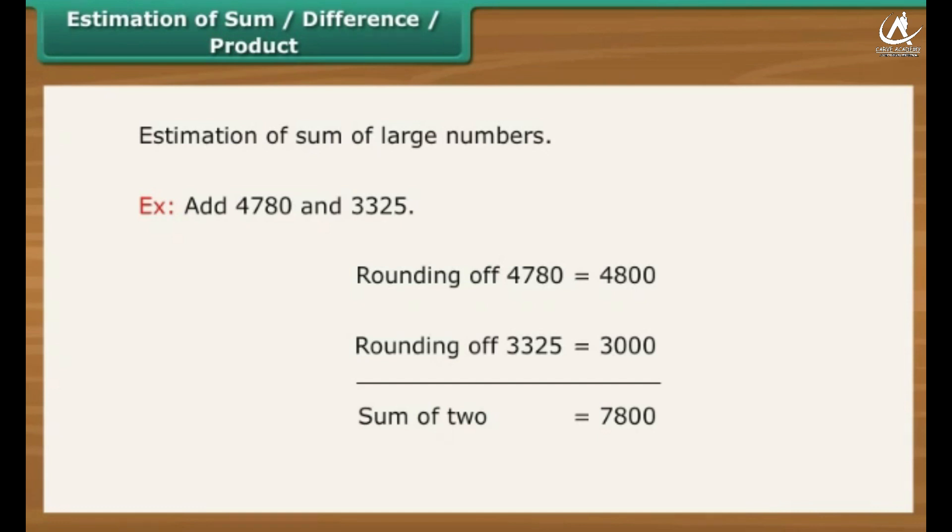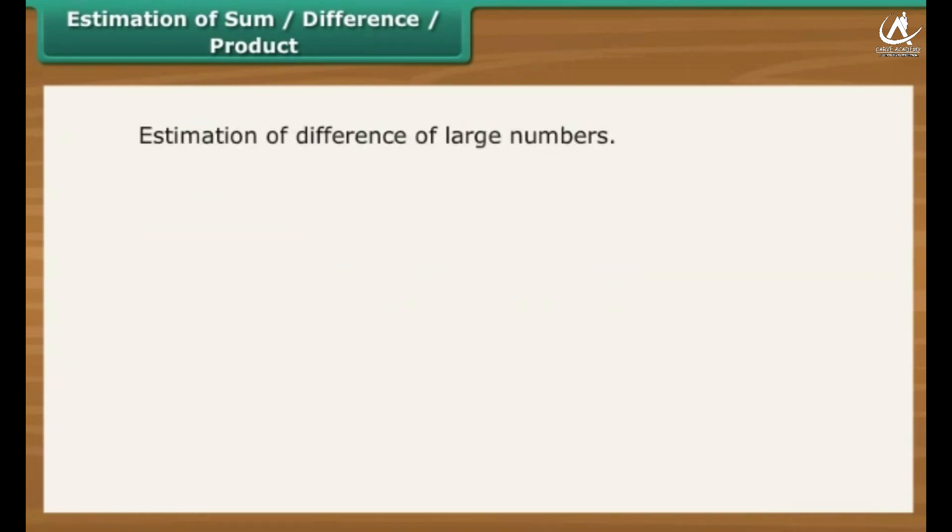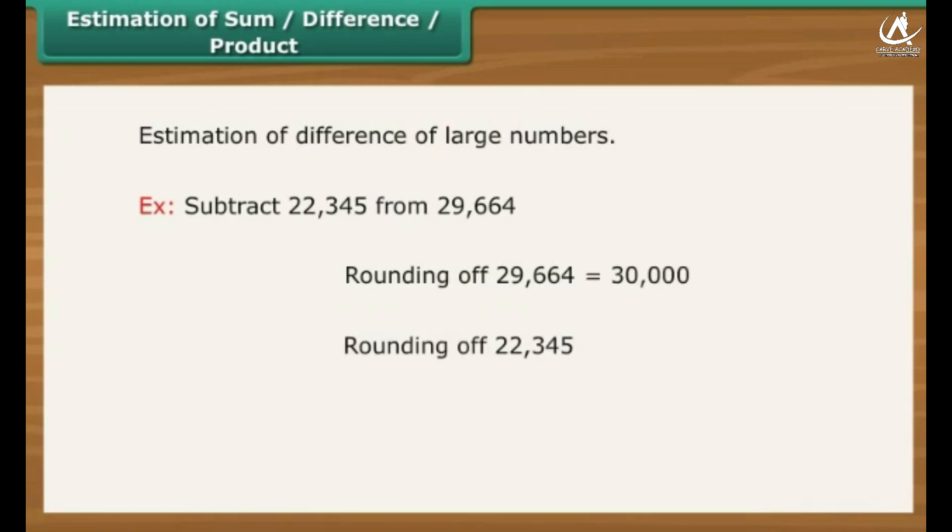Estimation to nearest number can help in the estimation of the difference of two large numbers. For example, subtract 22,345 from 29,664. Rounding off 29,664 would make it 30,000. Rounding off 22,345 would make it 20,000. Difference of 2 is equal to 10,000.